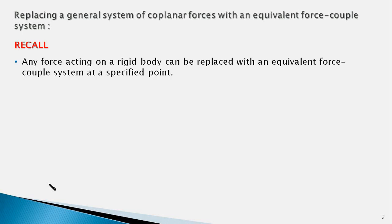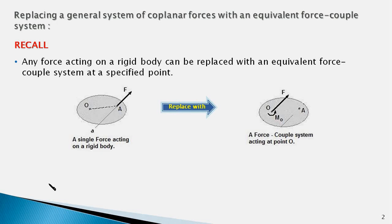Recall from the previous video that any force acting on a rigid body can be replaced with an equivalent force-couple system at a specified point. Here in this diagram, we have a force F acting on the rigid body and its point of application is point A on the body. If we want the force to act at any other point, say point O which is not on its line of action, then we have to add a couple of moment MO which is equal to the moment of the original force F about point O.